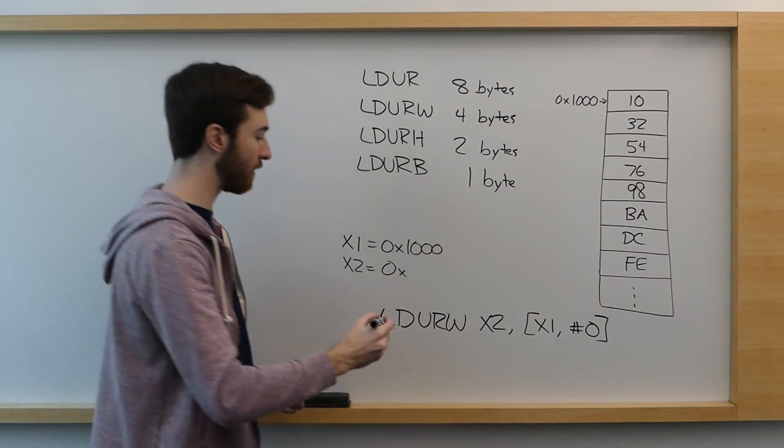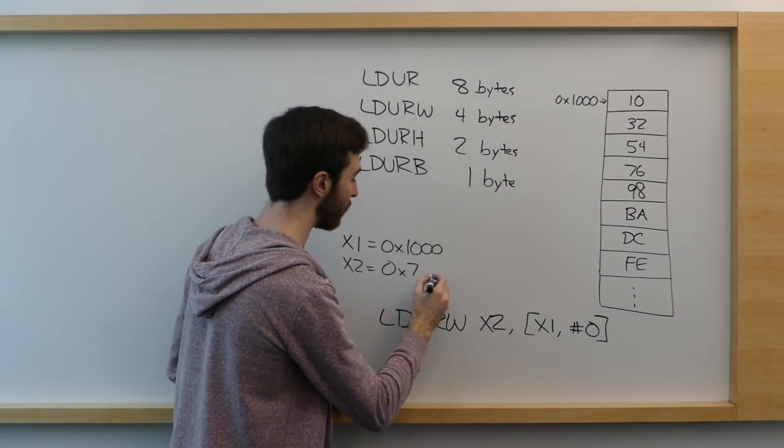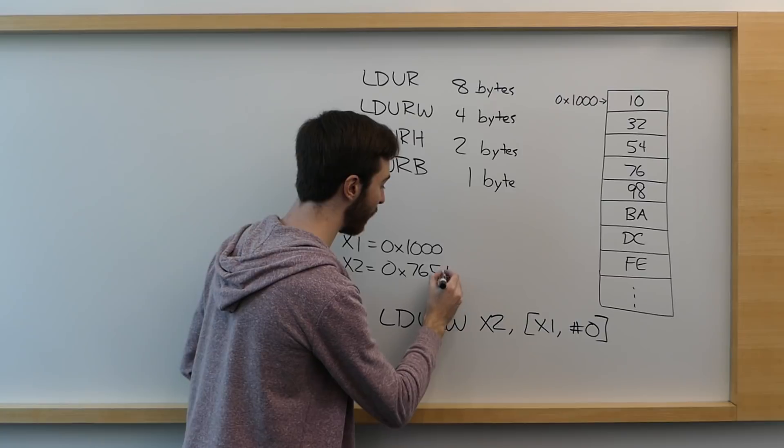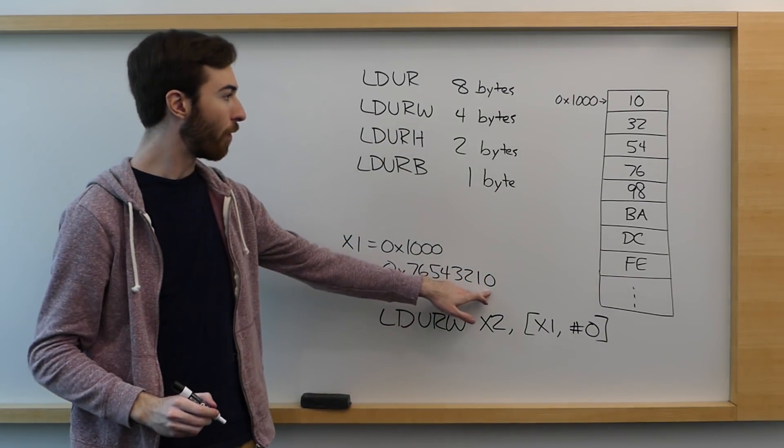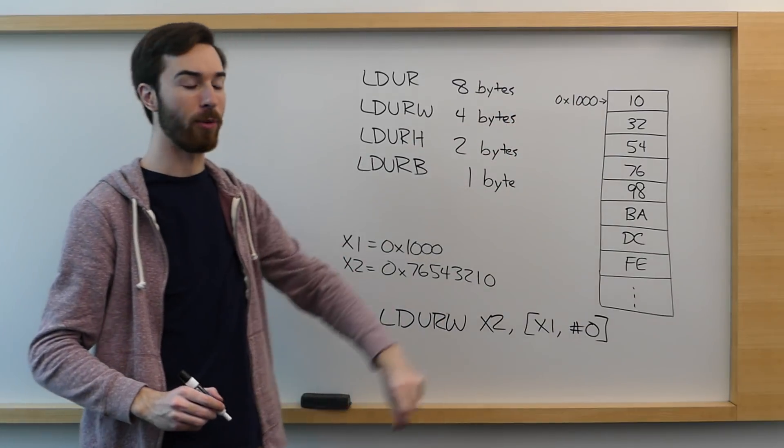And again, if this is a little endian system, we would assume that that is read in as 76543210. Four bytes read starting from that address and moving downward.